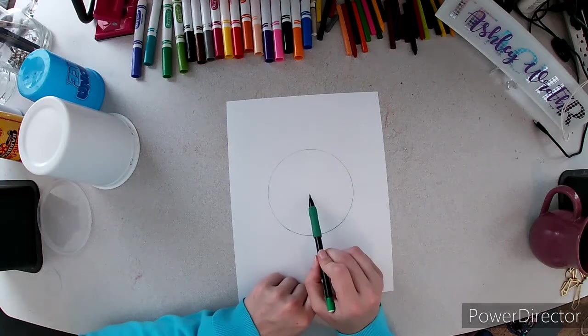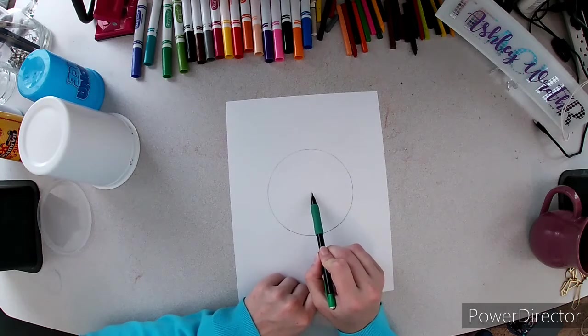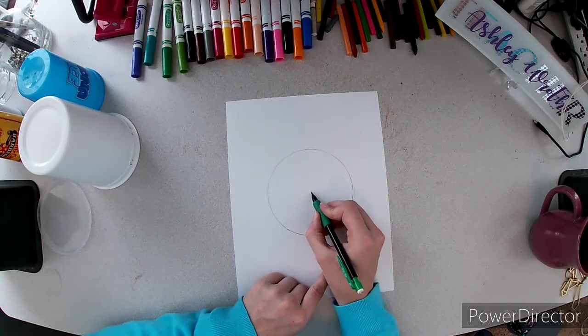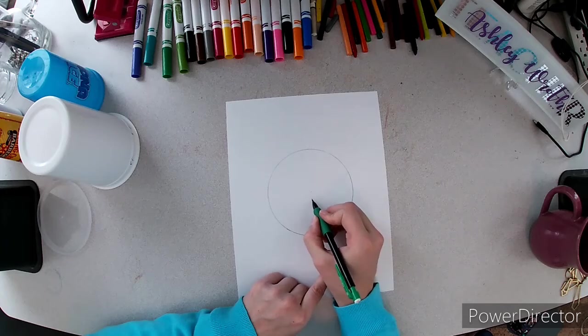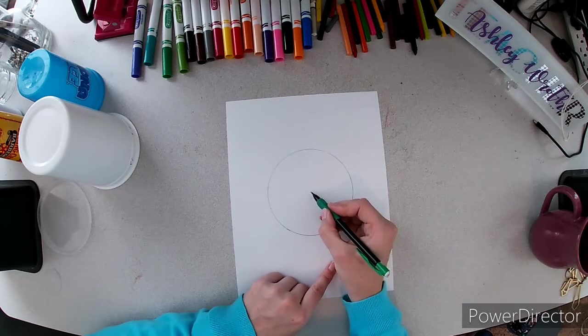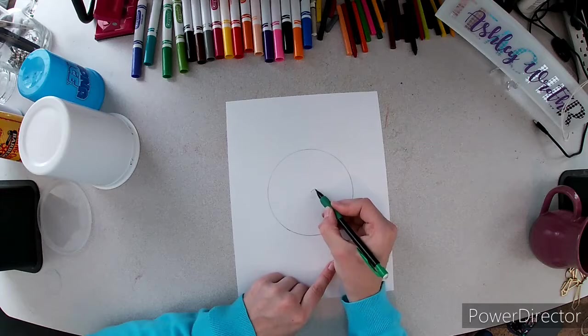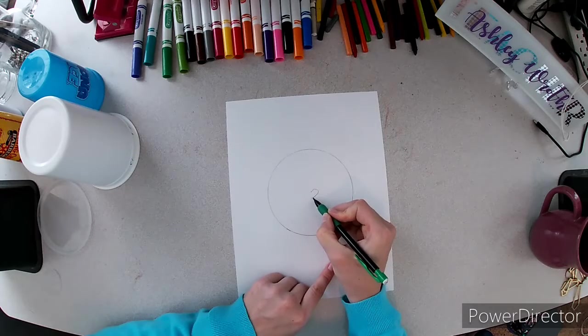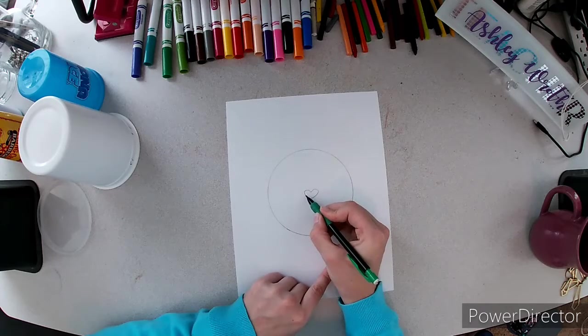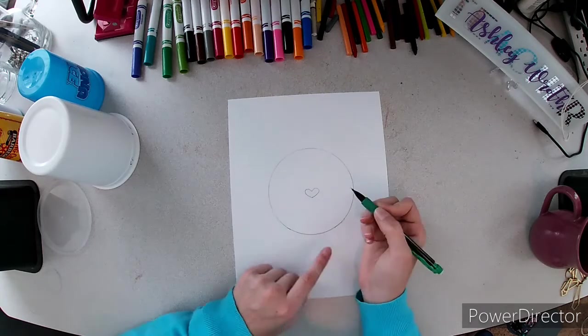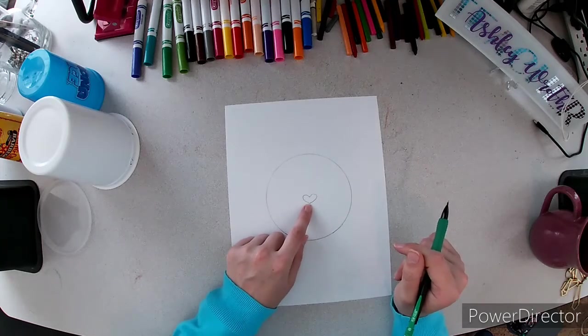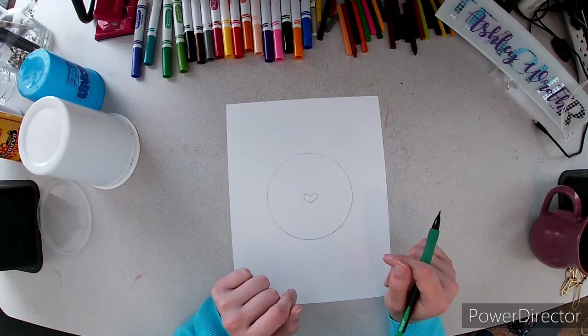For our tiger's nose find the middle or as close to the middle as you can get and we're going to draw a heart. So an easy way to draw a heart is to draw a dot and then another dot below it and from the top dot you go up around and back down. Up around and back down. If you can already draw a heart without doing those two dots you don't have to do those two dots. That's just a trick to help you if you are struggling with drawing a heart.